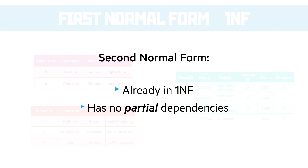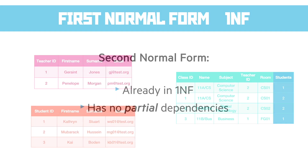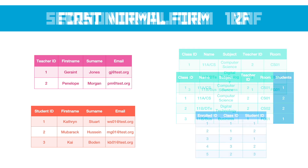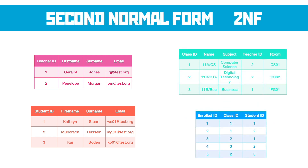Second normal form must already be in first normal form and should have no partial dependencies. In this case, partial dependencies exist because we're repeating class numbers and class IDs in the students link, which we shouldn't be. This means we probably need a separate table to connect students to the classes they're in. I've called this the enrollment table, with an enrolled ID that simply links a class to a student. Now that's in second normal form because there are no partial dependencies at all.